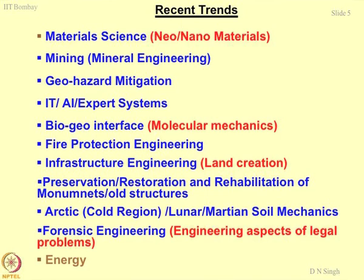Arctic soil mechanics and cold region engineering — there are many countries where nature has given them only permafrost as soil: Norwegian countries, Scandinavia, Canada, some parts of the US. Right now we conveniently talk about a three-phase system — soil, water, and air. In cold countries, any of these phases may disappear or be added, requiring a four-phase multiphase system. This is how the transformation of knowledge keeps changing.